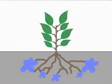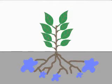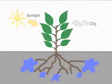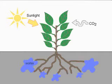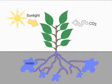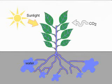For most plants, photosynthesis occurs in the leaves. During the daytime, leaves absorb carbon dioxide and sunlight. Water is absorbed through the roots and transported up the stem to the leaves in special pipes called xylem.